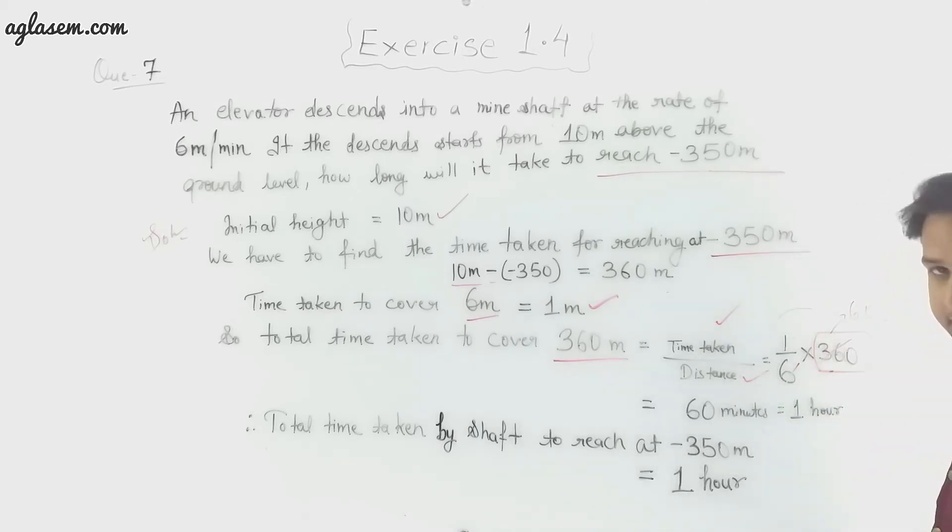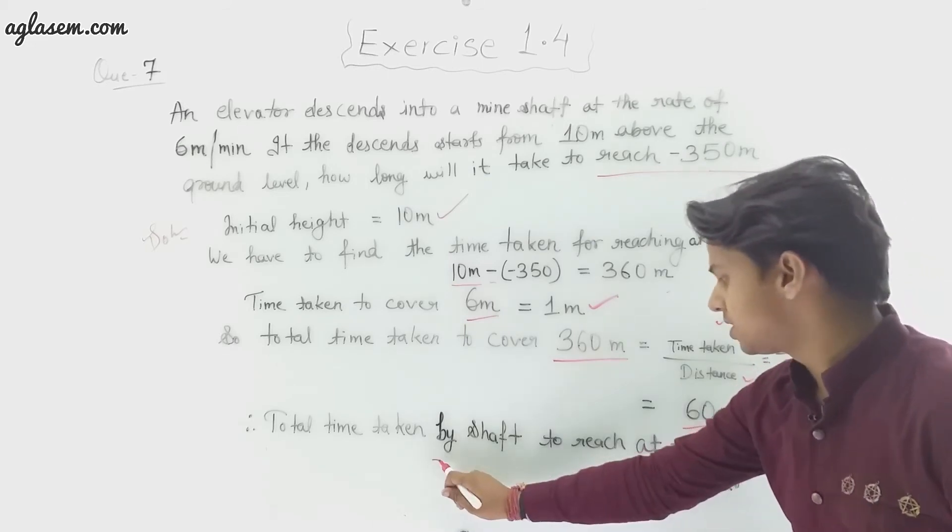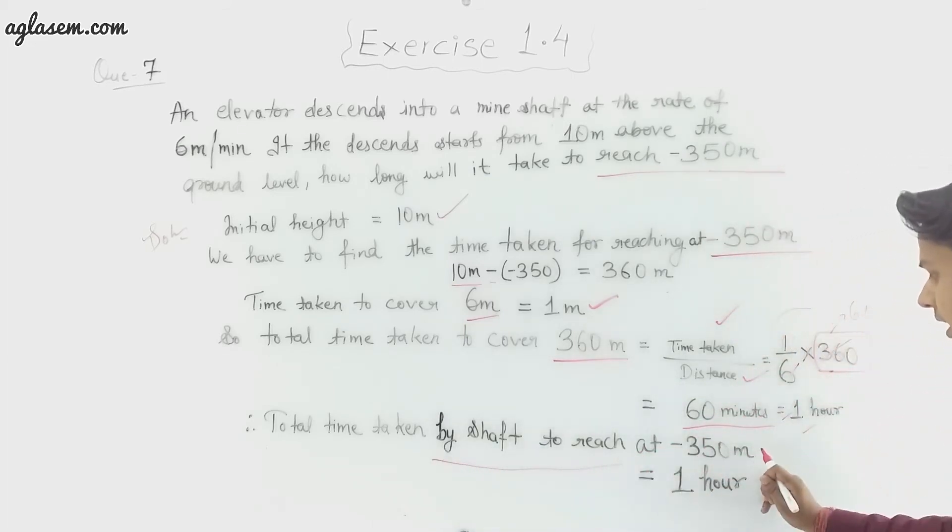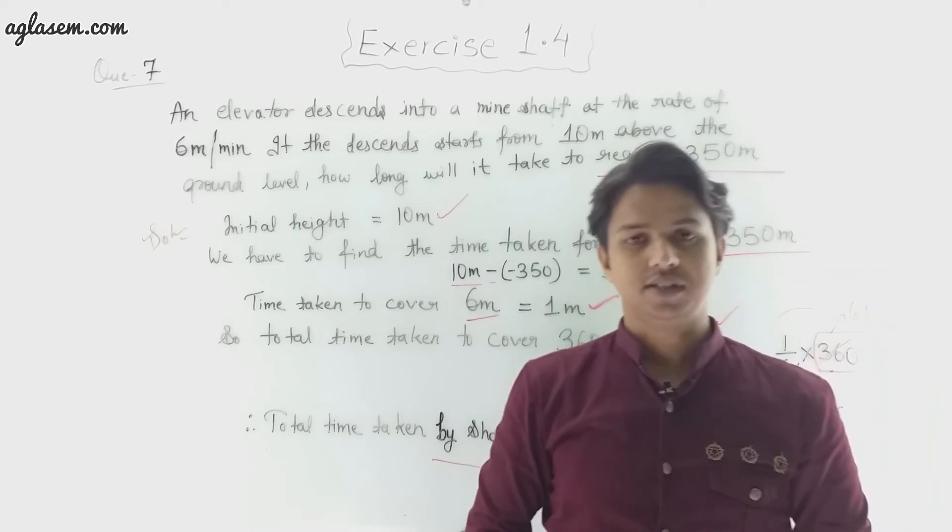And 1 × 60 = 60 minutes equals 1 hour. So total time taken by shaft to reach at -350 meters will be 1 hour. So this was all for question number 7.